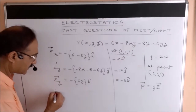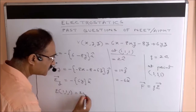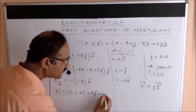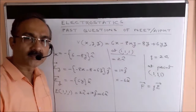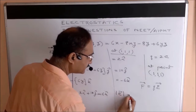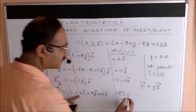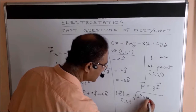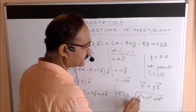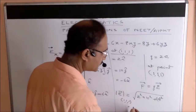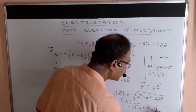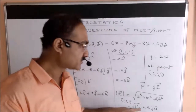The electric field at point (1, 1, 1) is therefore E = 2î + 10ĵ − 6k̂. The magnitude of the electric field is √(2² + 10² + 6²) = √(4 + 100 + 36) = √140, which simplifies to 2√35.